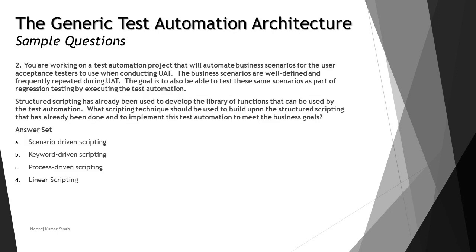The next question, number two: you are working on a test automation project that will automate business scenarios for user acceptance testers to use when conducting UAT. The business scenarios are well defined and frequently repeated during UAT. The goal is also to test these same scenarios as part of regression testing by executing the test automation. Structured scripting has already been used to develop a library of functions that can be used by the test automation. What scripting technique should be used to build upon the structured scripting and implement test automation to meet the business goals? Importantly, you are talking about UAT, which is one aspect of the different levels of testing. Notice that the word 'scenario' has been used multiple times in the question.